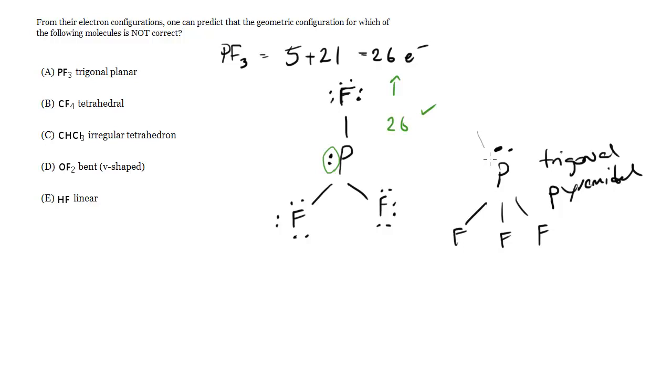It's derived from the tetrahedral. You can imagine if we had another F here, this would just be tetrahedral. So this is not the right shape. This is not trigonal planar, so this is our answer. But let's just check the rest.